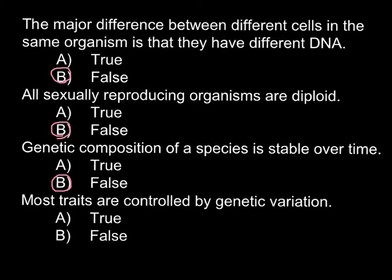The last question: most traits are controlled by genetic variation. This is also false, because the genetic composition of an organism has great influence on development, but the environment also has a huge influence on how organisms develop. So answer B would be correct — this is a false statement.